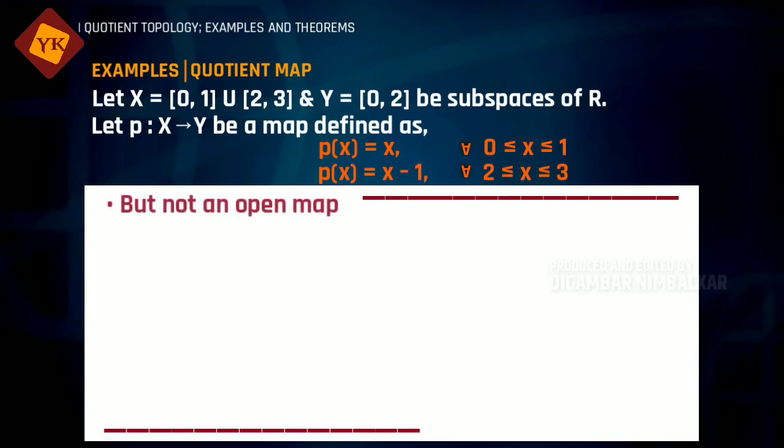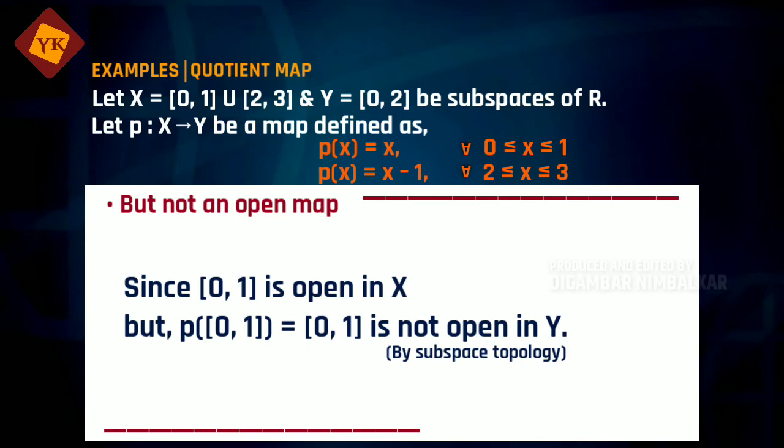However, this map is not an open map because if you consider [0,1], then this is an open subset of topological space X such that p of [0,1] is not an open set in Y according to subspace topology. So therefore the map p is not an open map.